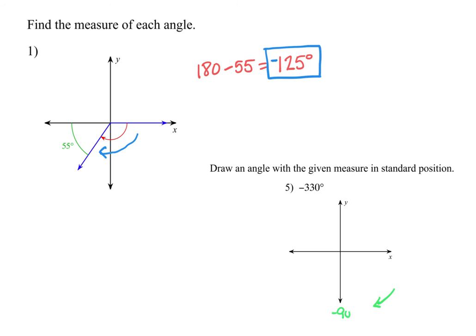Down here would be negative 90, this would be negative 180, negative 270, negative 360. So this negative 330 is going to be in the first quadrant, and it's going to be 30 degrees away from your 360. And so it's going to be approximately here.